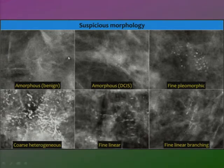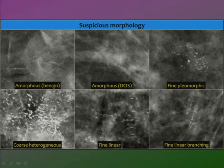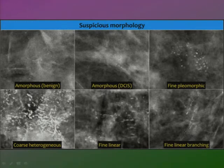Amorphous calcifications that are diffuse in the breast are benign, but amorphous clustered calcifications are DCIS. Fine pleomorphic means very small calcifications with different shapes from one another — visible on magnification view. Coarse heterogeneous calcifications are coarse but have irregular, varying shapes. Fine linear and fine linear branching follow the anatomy of the ducts.